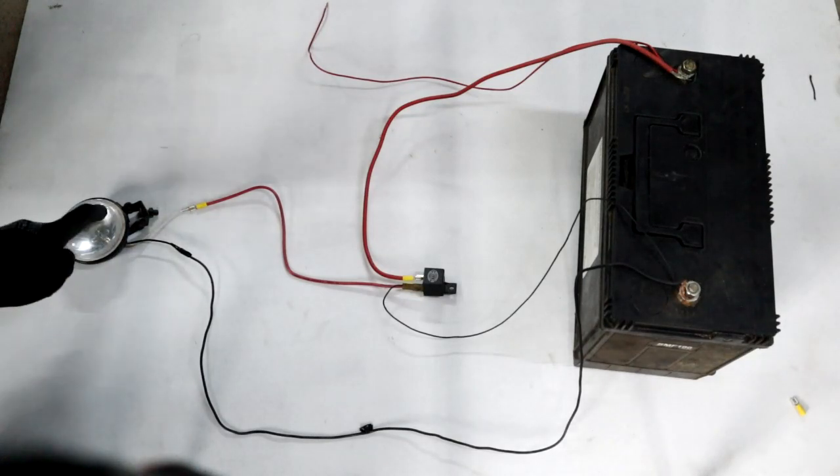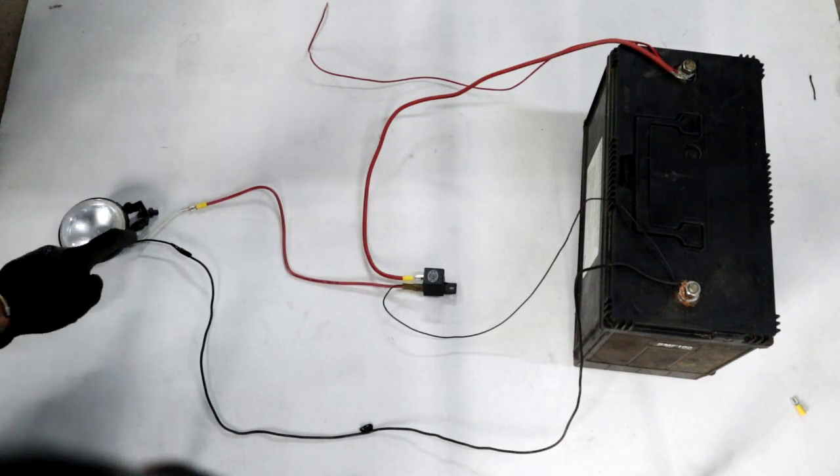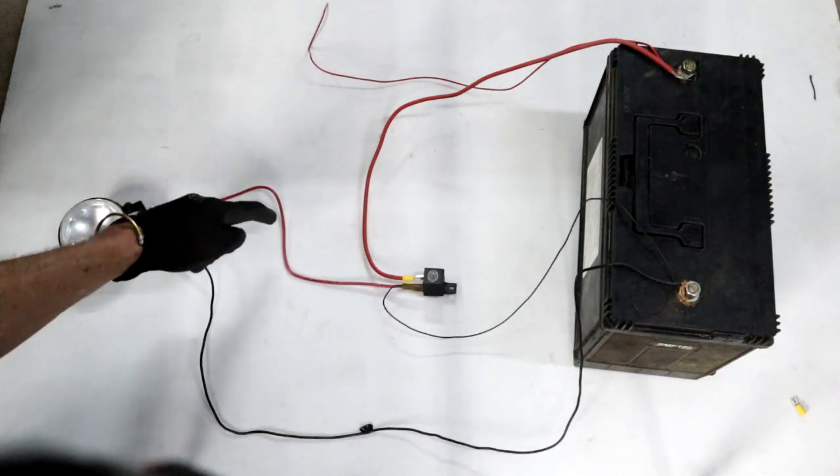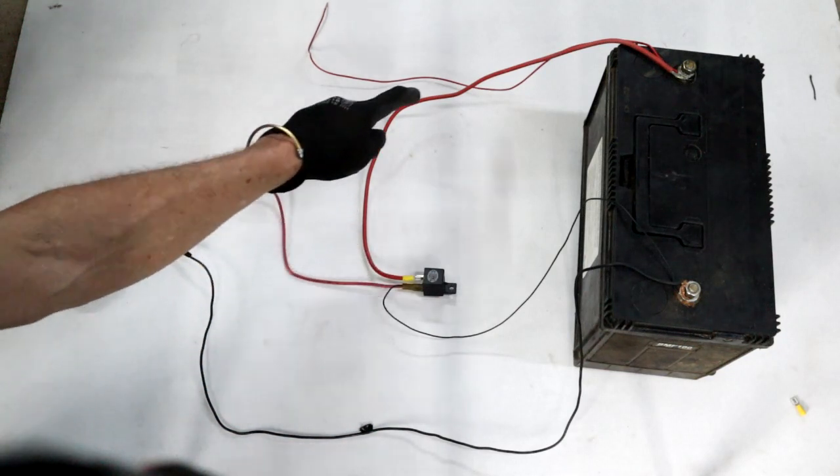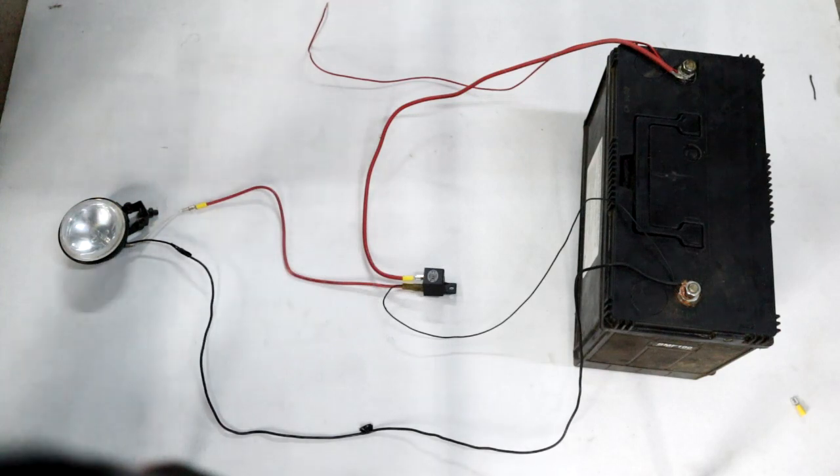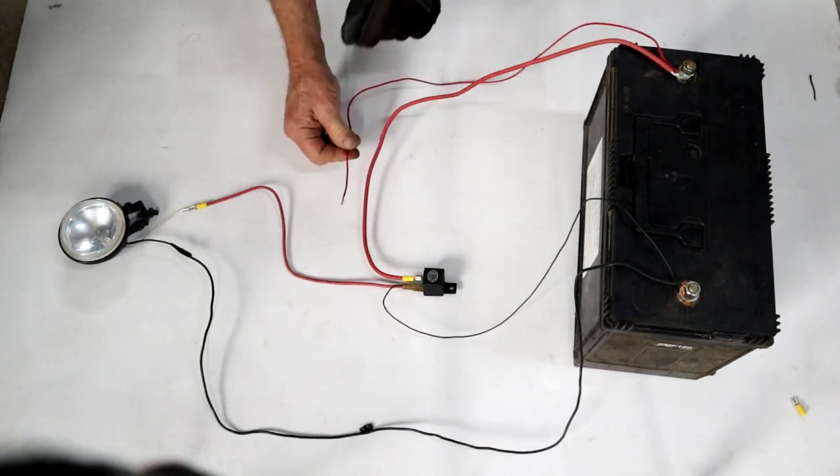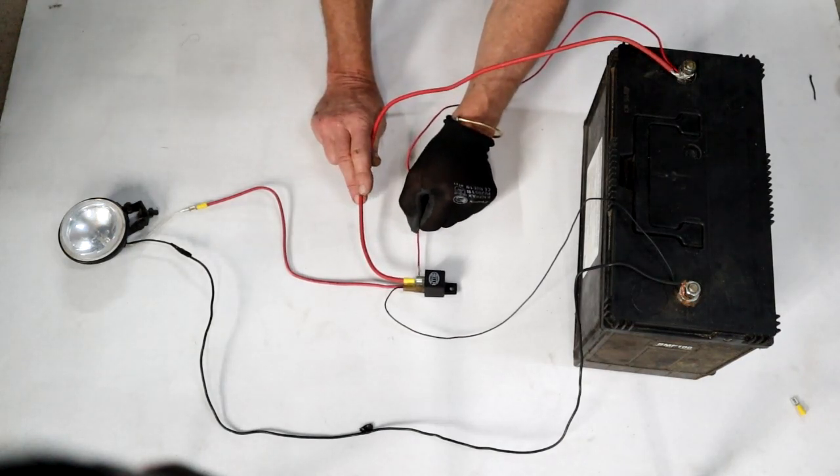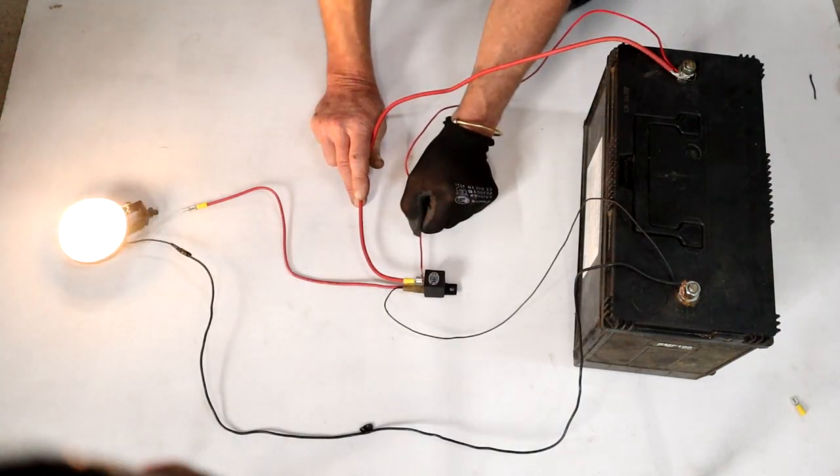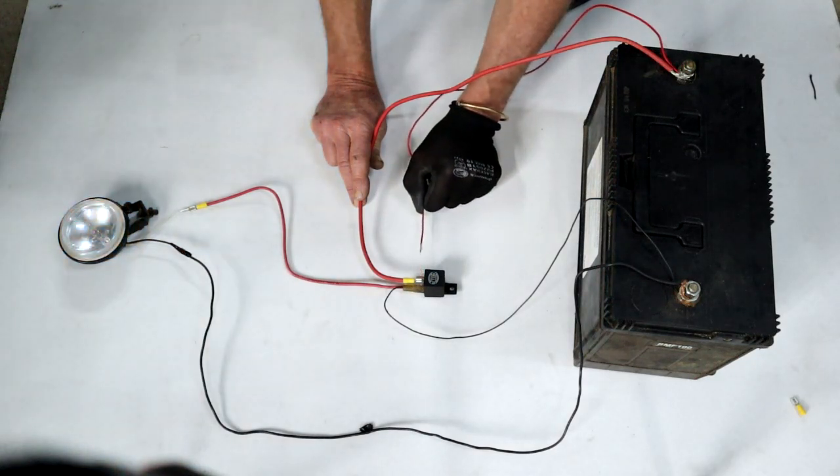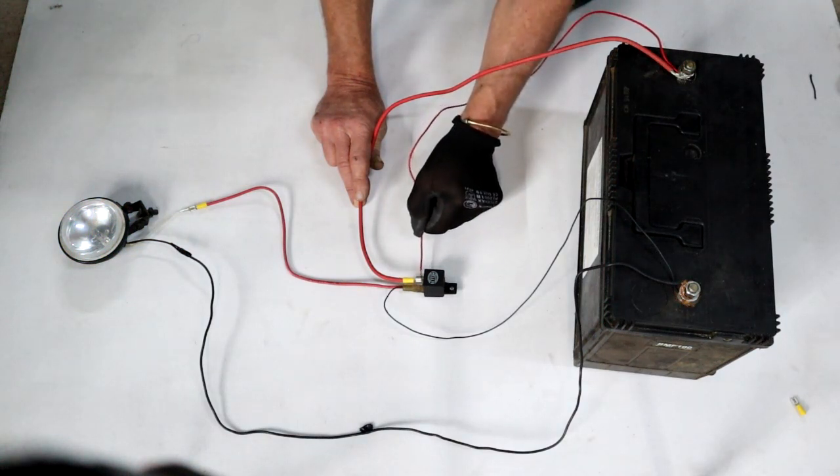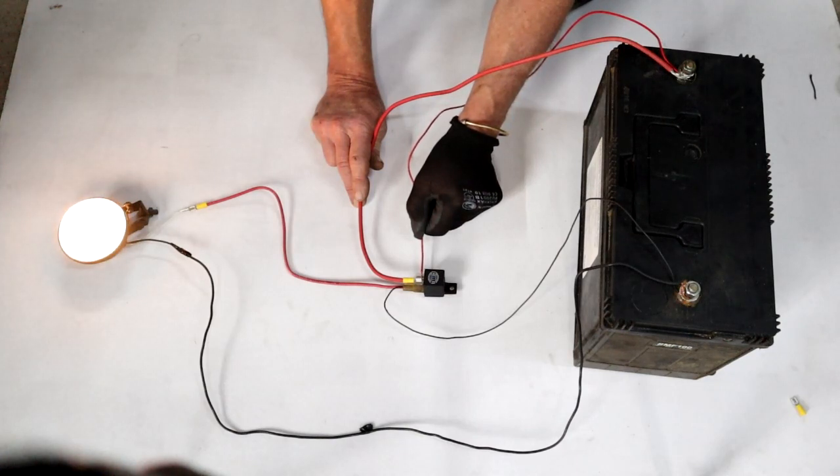Okay one step further. There's my load that I would like to switch. It's already connected on the negative side directly to the battery. On the positive side it goes via the switch in the relay to the positive side of the battery. So the relay is going to act as the switch to switch the load on. To activate the switch I'm going to energize the coil by touching it here to terminal 85. Here we go. Load comes on, you get the idea.